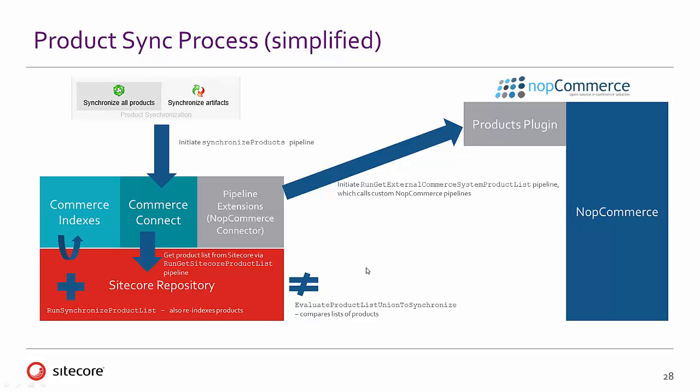We are doing that evaluation, and then if there are additional products in that external e-commerce system — in the NopCommerce example, it's one way, merely pulling from NopCommerce into Sitecore — we run that synchronized product list process, add those to the Sitecore repository, and then re-index. That's either Lucene or Solr depending upon what you have configured, and that ensures that various interfaces within Sitecore work correctly, including search interfaces using Lucene.